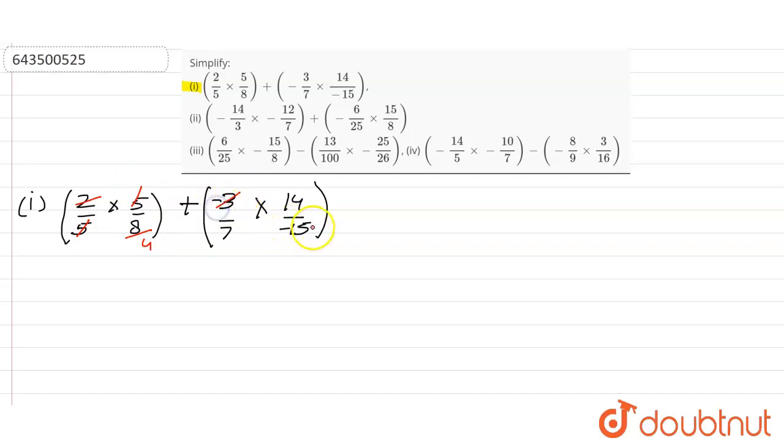Similarly here, minus three and minus 15 gives us five, and seven into 14 is 2. So let's write it down, the remaining numbers, so it will be one by four.